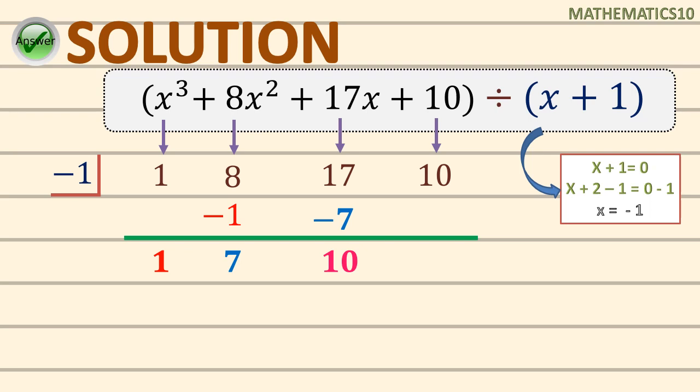Multiply again by the value of x, which is negative 1. So 10 times negative 1 gives negative 10. And lastly, since it's the last numerical coefficient, this is the last operation. So 10 plus negative 10 is 0. The rightmost value we always get in synthetic division is considered as our remainder. So our remainder is 0.